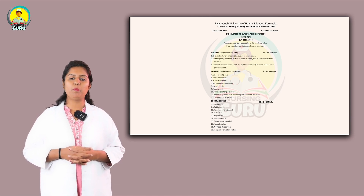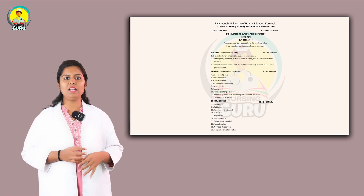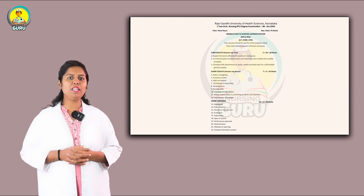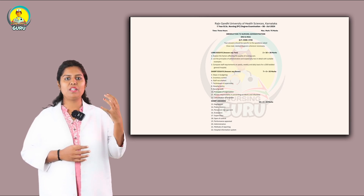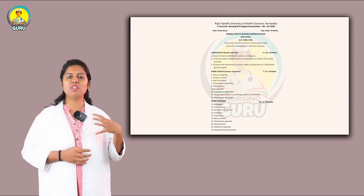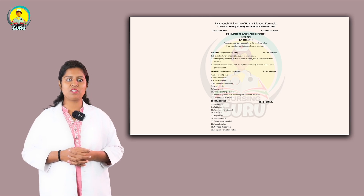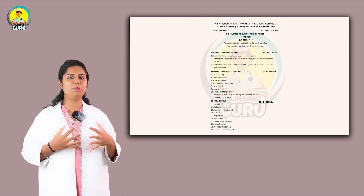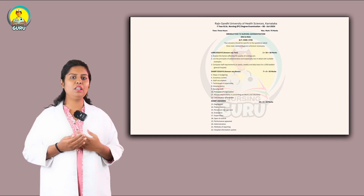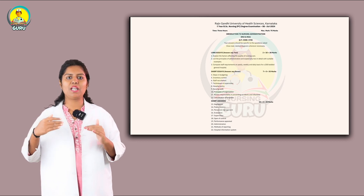Continuing with short essay questions: hospital policy — explain what it is and how it works. Nursing audit — this is very important and is asked repetitively every year. Principles of organization — what is organization, what are the principles, how to run an organization. Nurse's responsibility in preventing accidents and infections — how to control and prevent them and what measures to take. Classification of hospitals — write the definition of hospital and then the classification.